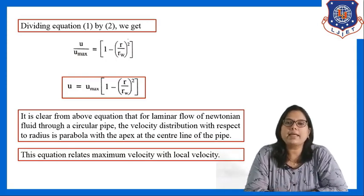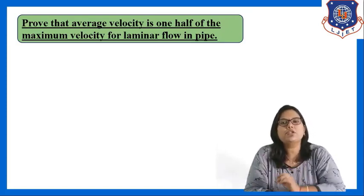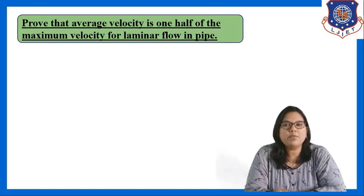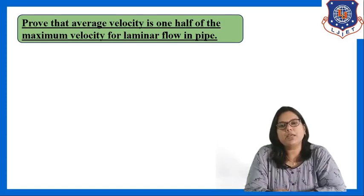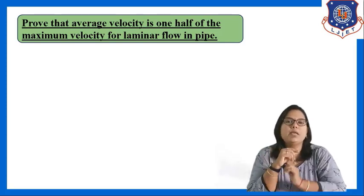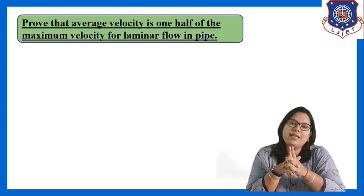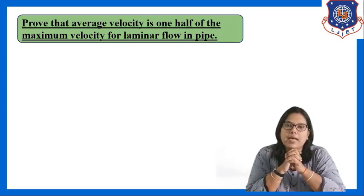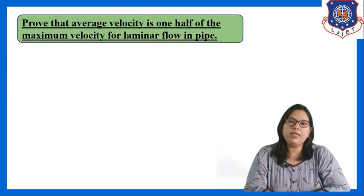Now let us see the second derivation. In this derivation we have to prove that the average velocity is half of the maximum velocity in a pipe. In the previous derivation we derived the relation between local velocity and maximum velocity; now we relate average velocity with maximum velocity, and that will show that average velocity is one-half of maximum velocity for laminar flow in a pipe.